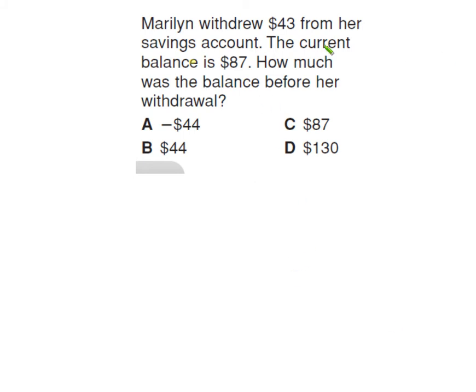Marilyn withdrew $43 from her savings account. The current balance is $87. How much was the balance before the withdrawal? So she had some money, X. She took out $43, and she ended up with $87. Now think about that. So she had so much money.